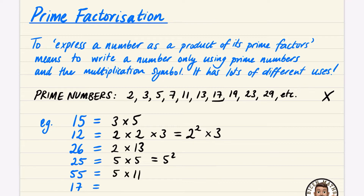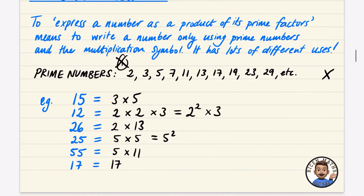17 is already in the prime list, so I just write 17. I won't write 17 × 1 because 1 is not in the list — it's not a prime number. So I simply write 17.